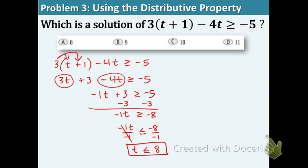The original problem said which one of them, A, B, C, or D, is a solution. And what you need to do is look at our answer. T is less than or equal to 8. Which number is less than, aka smaller, or equal to 8? 9, 10, and 11 are all bigger than 8. So 8 is the only number that's the solution up there.